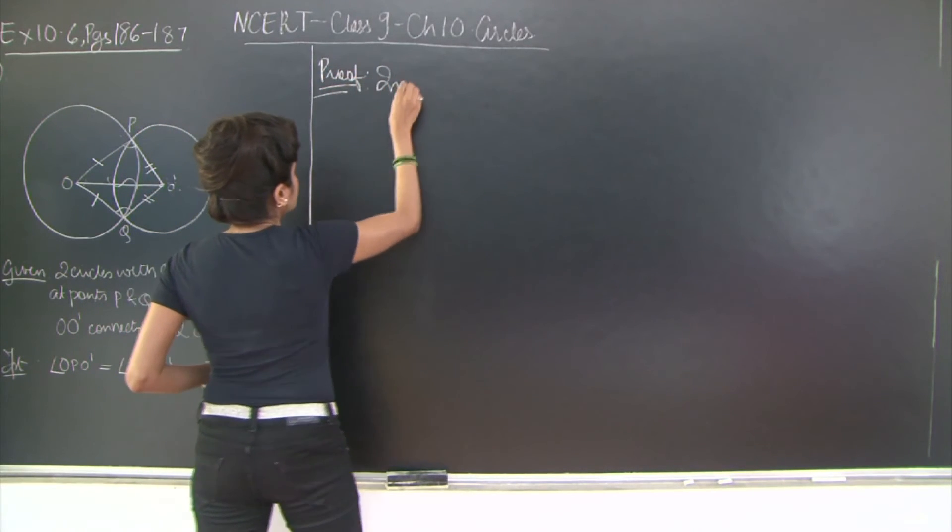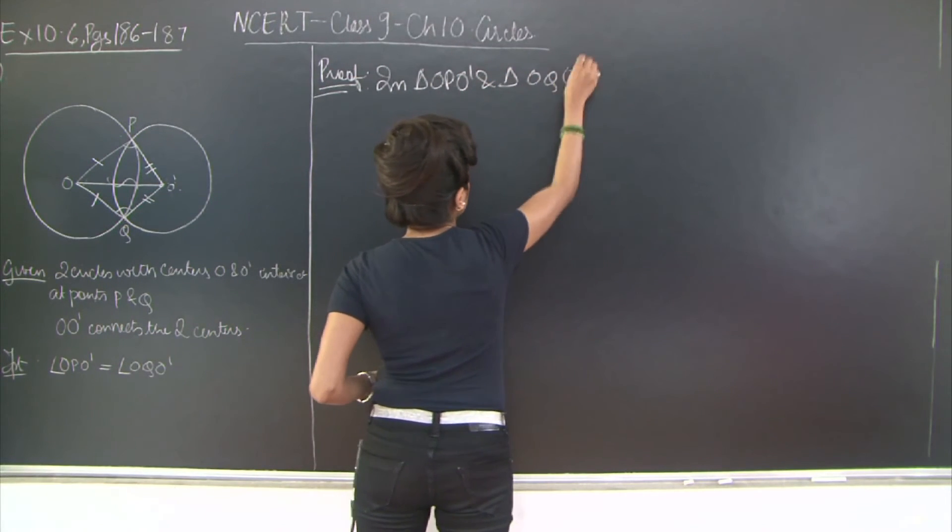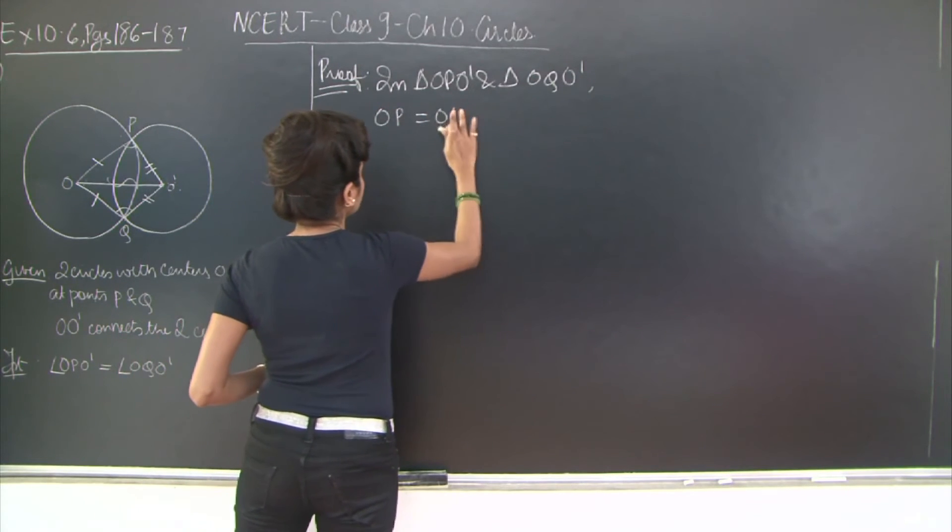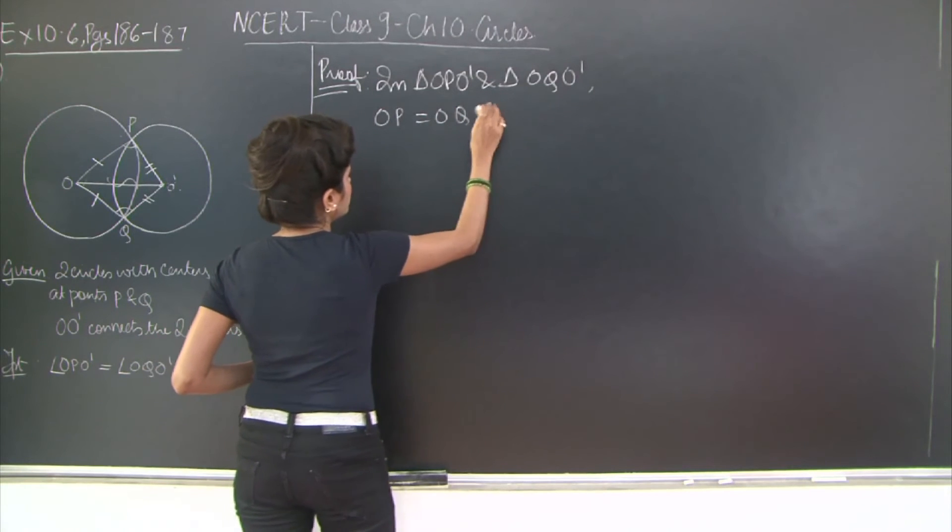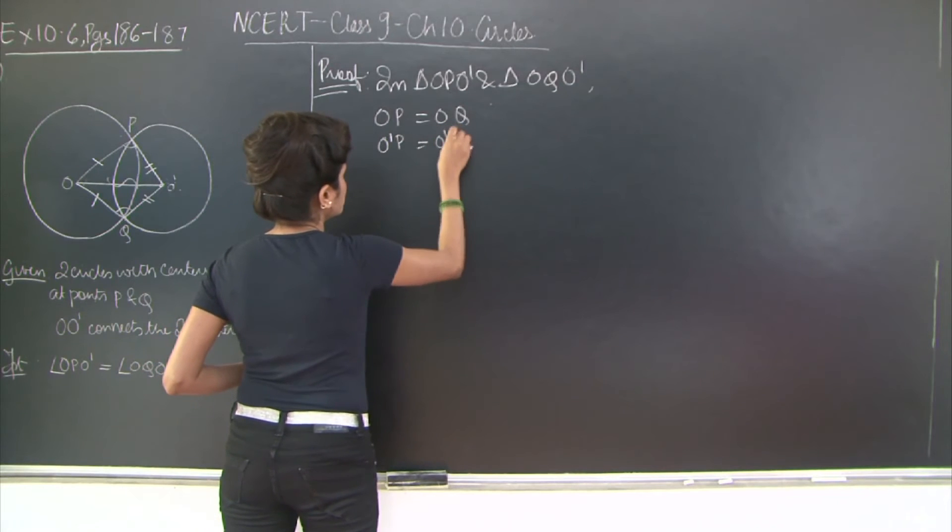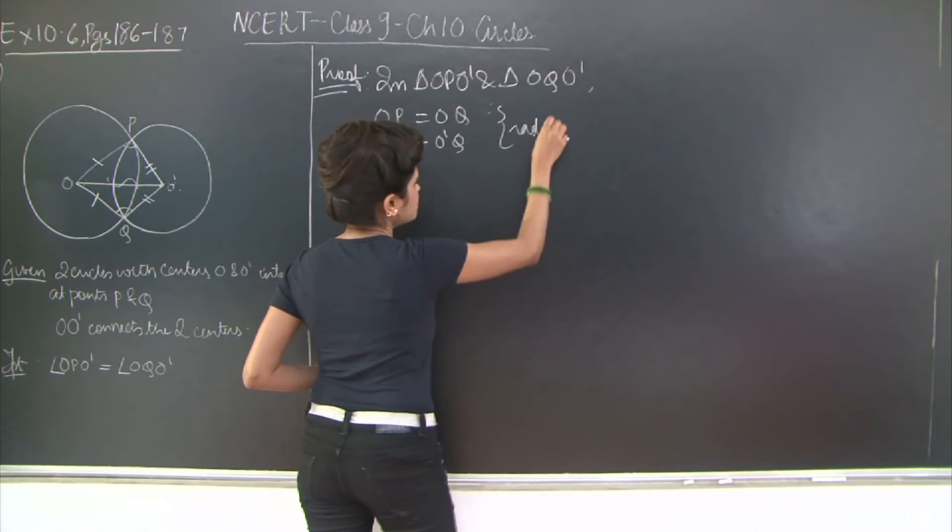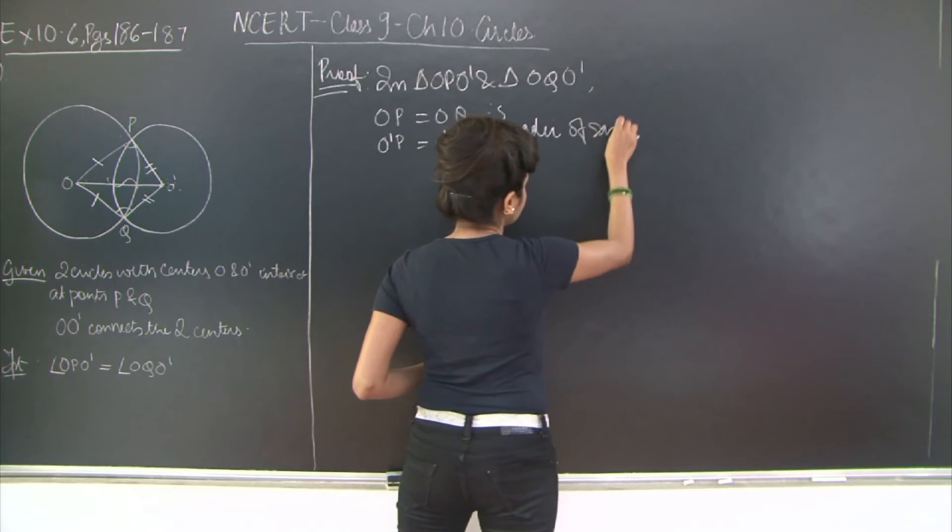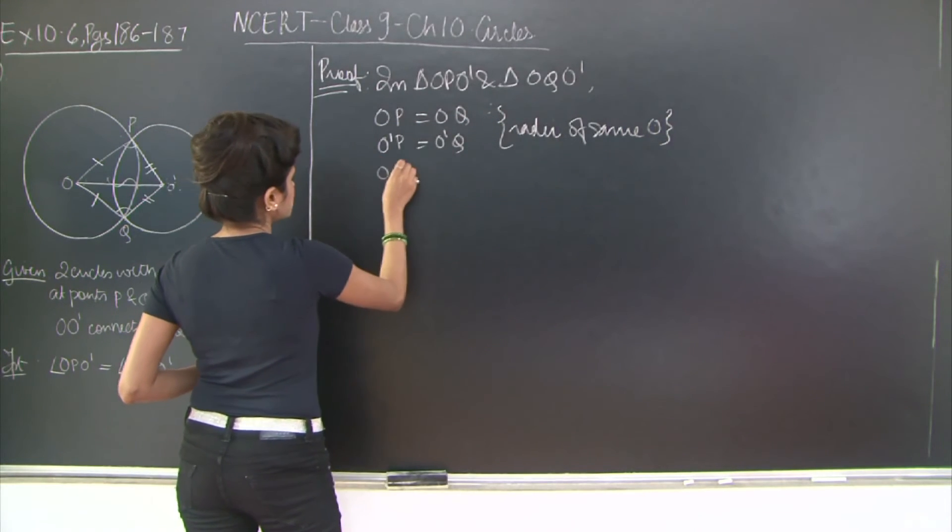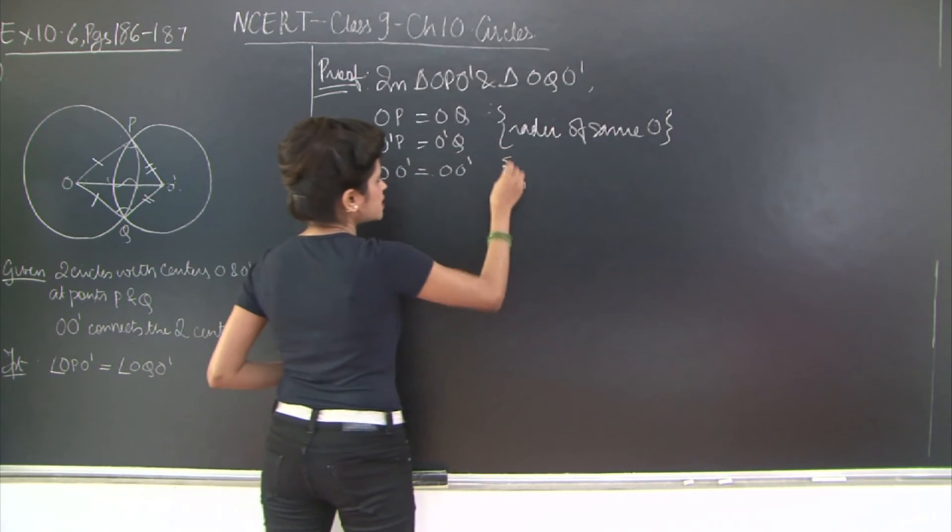So in triangle O, P, O' and triangle O, Q, O' I have O, P is equal to O, Q and O' P is equal to O' Q because here the reason will be radii of the same circle and I have O, O' is equal to O, O' because it is the common side.